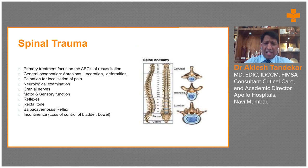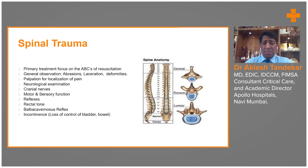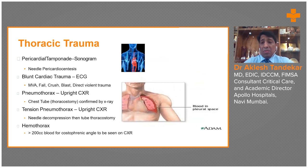Spinal cord injuries are associated with abrasion, laceration, or deformities of the spine, particularly on the back. On log rolling and palpation there will be significant pain. On neurological examination there will be a neuro deficit with flaccid paralysis of the extremities, while cranial nerves may be intact. Sensory examination will show significant sensory loss, loss of superficial reflexes, loss of rectal tone, and incontinence because control of the bladder is lost, leading to bladder incontinence as well.